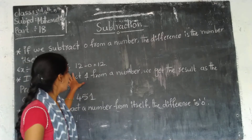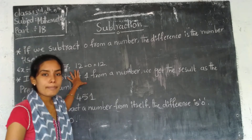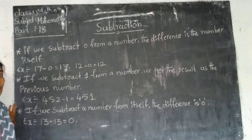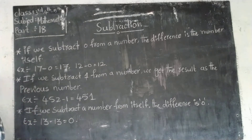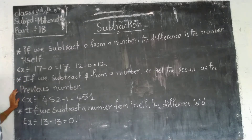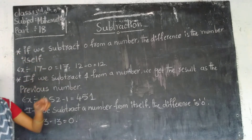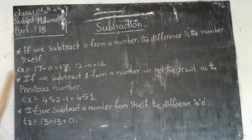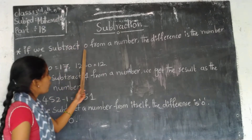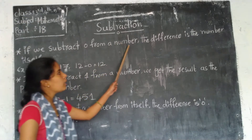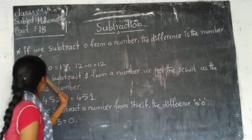What does that mean — properties of subtraction? So we know the properties of subtraction. We already know how to solve subtraction, but to solve it very quickly and very easily we have to follow the properties of subtraction. The first one: if we subtract 0 from a number, the difference is the number itself.